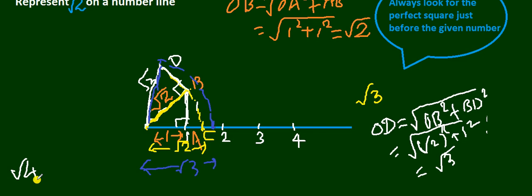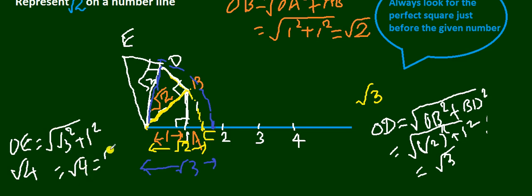For root 4, my root 3 becomes the base, and at the base again I draw one unit perpendicular, name it as E, join E with O. So that if you apply the Pythagoras theorem again, OE will be square root of root 3 square plus 1 square, which will be root 4, which is nothing but 2. And you will check: once you take OE as your radius and try to drop in the arc, it will exactly coincide with 2 if you are doing it properly.